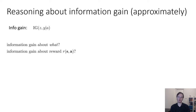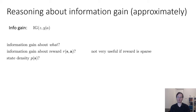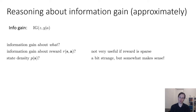We could ask for information gain about the reward function, but that's not very useful if we have a hard exploration problem because the reward is probably zero almost everywhere. We could ask for information gain about the state density, P(s), which sounds a bit strange, but actually somewhat makes sense because information gain about the state density means that you want to do things that will change the state density, which means that you will do novel things — so that goes back to the first category of methods.